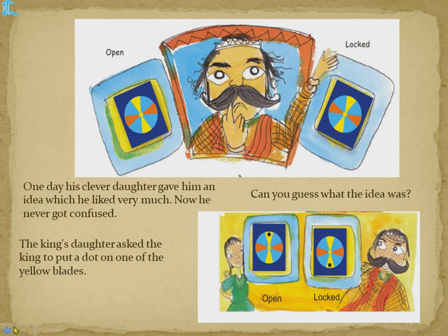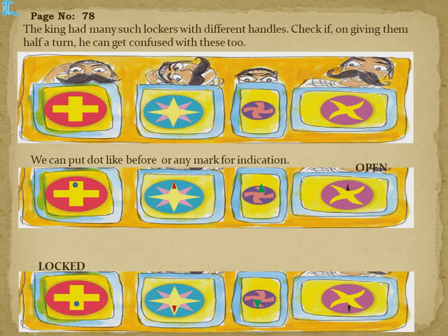One day his clever daughter gave him an idea which he liked very much, and he never got confused again. She asked the king to put a dot on one of the yellow blades. With a dot on top the locker is open; after half a turn the dot comes down, meaning it is locked. If the dot is up it's open, if it's down it's locked — no more confusion!